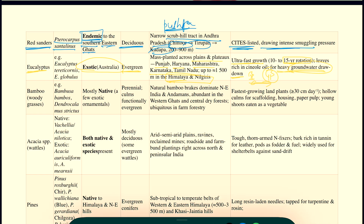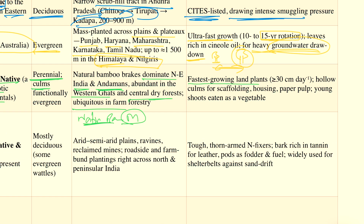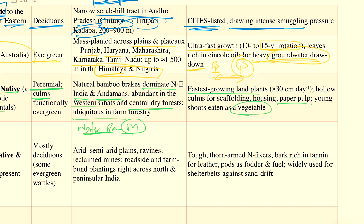Coming to Bamboo — it is mostly native with a few exotic ornamentals. Bambusoideae is the technical name. It is a perennial grass. Its geographical distribution is predominantly in the North-Eastern area, and it is also abundant in most of the Western Ghats, central dense forests, and most other areas. That is why we have the National Bamboo Mission with a special focus on the North-Eastern parts of our country. It is the fastest growing land plant. Its wood is used for pulp, and its younger shoots are eaten as a vegetable in certain parts of our country. One of its important unique features is its unique flowering behaviour — try to learn more about this.